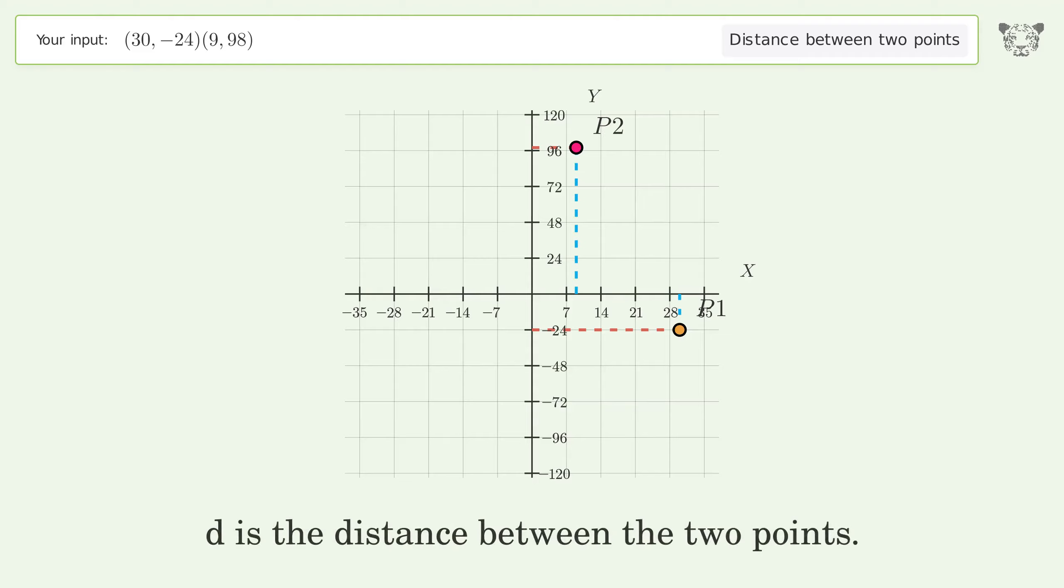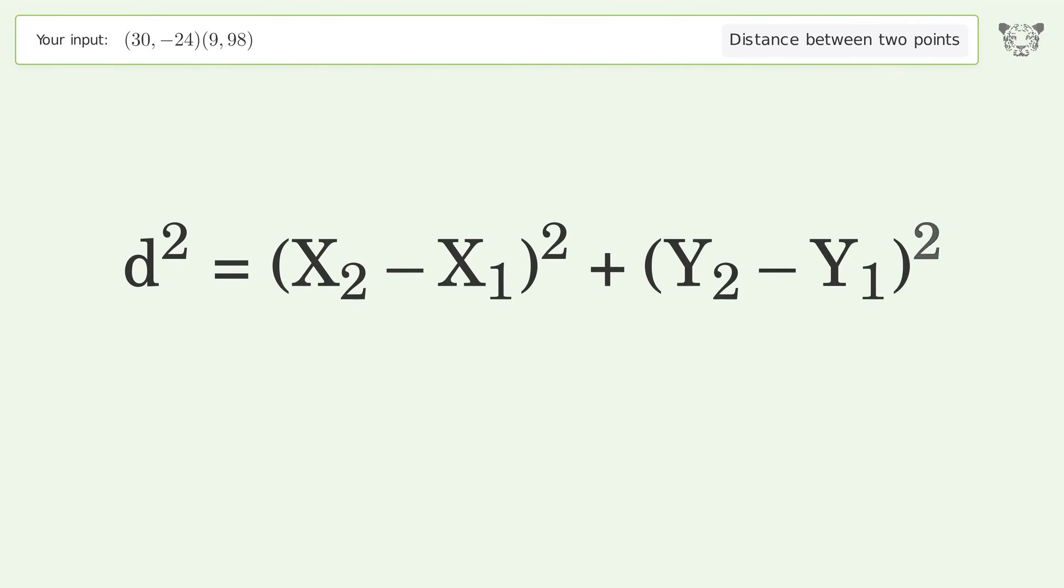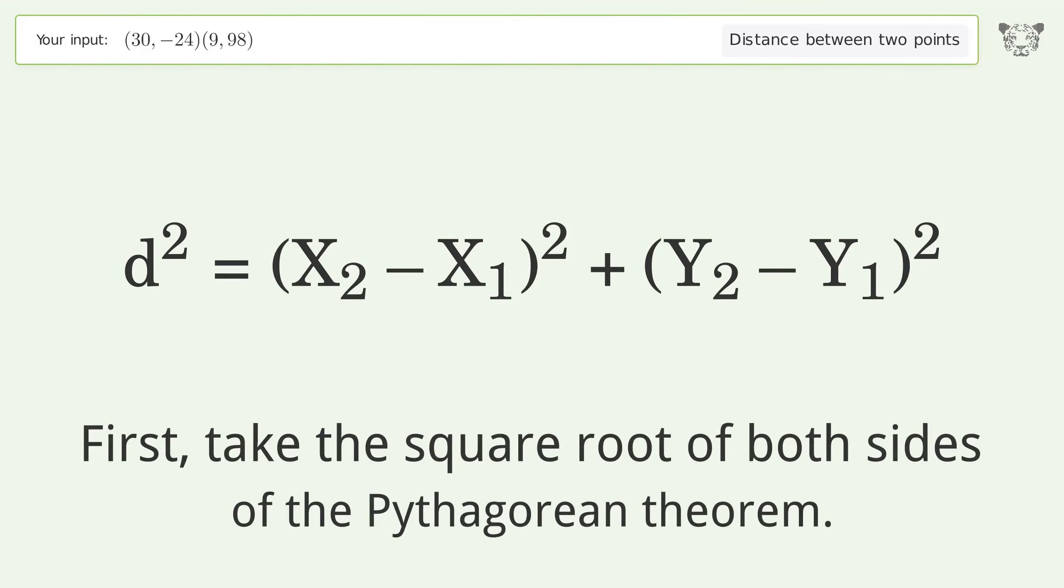d is the distance between the two points. First, take the square root of both sides of the Pythagorean theorem. This gives us the distance formula.